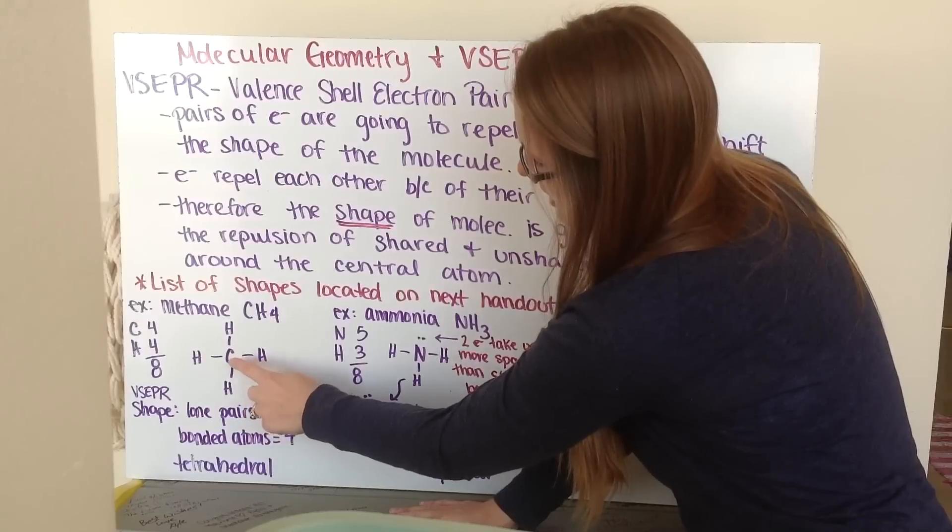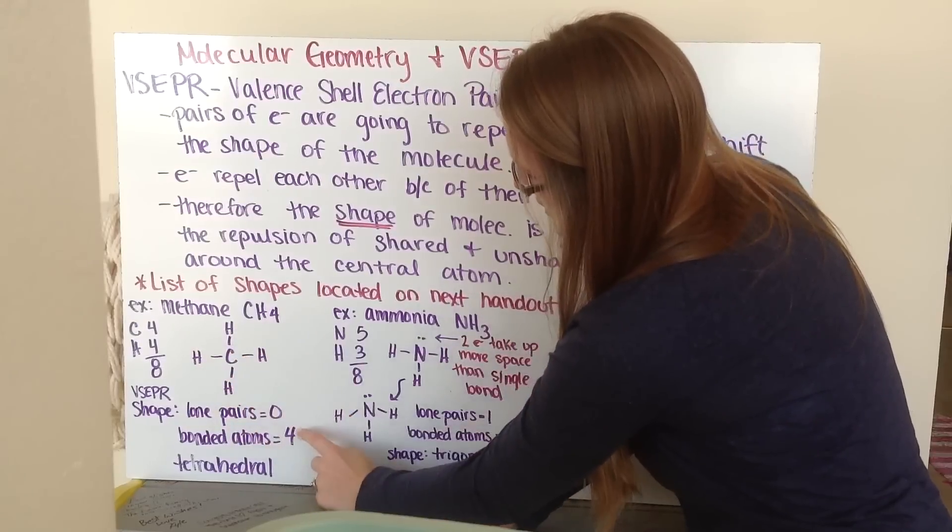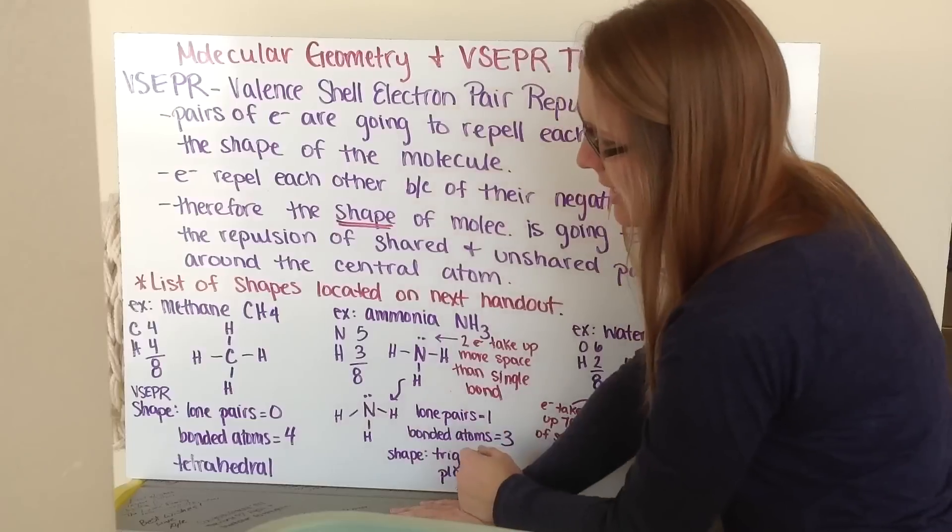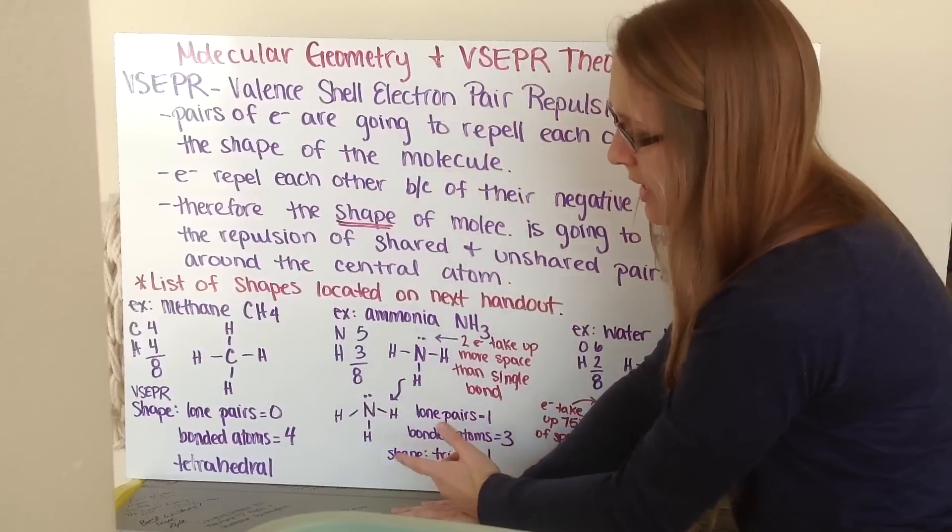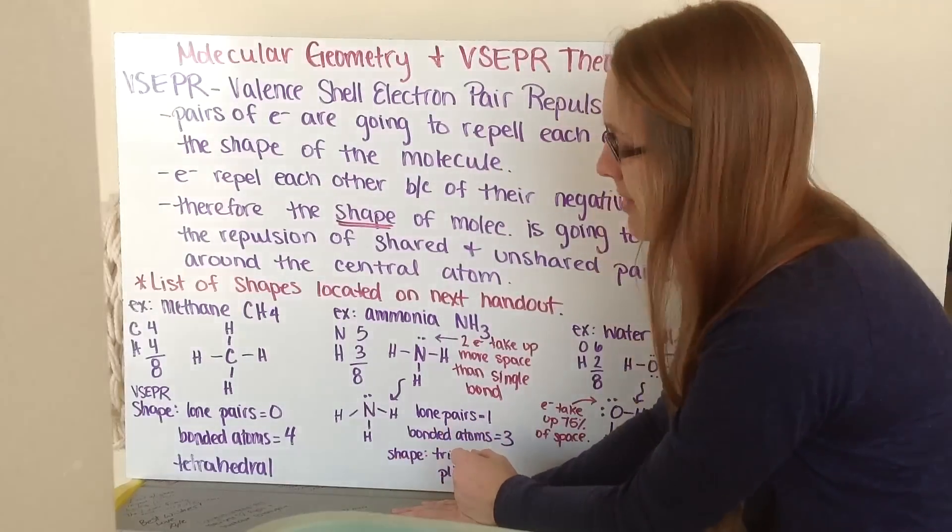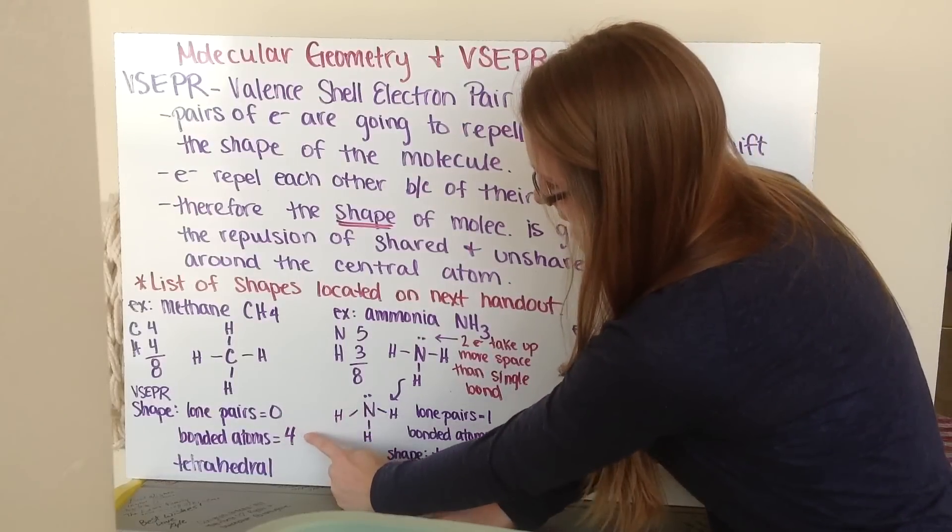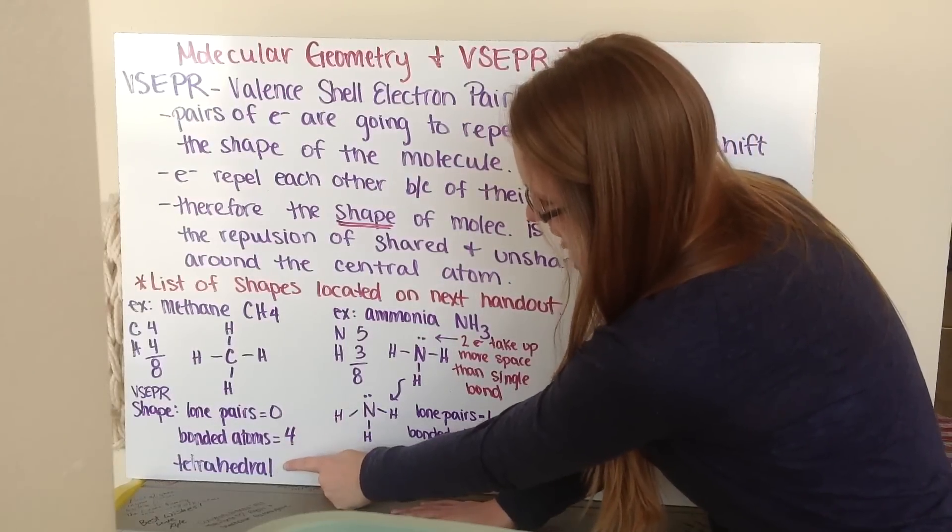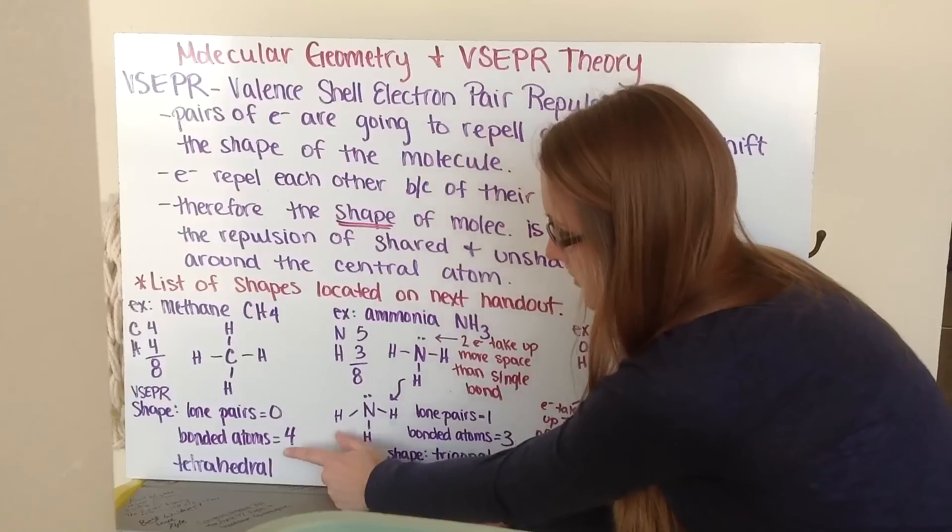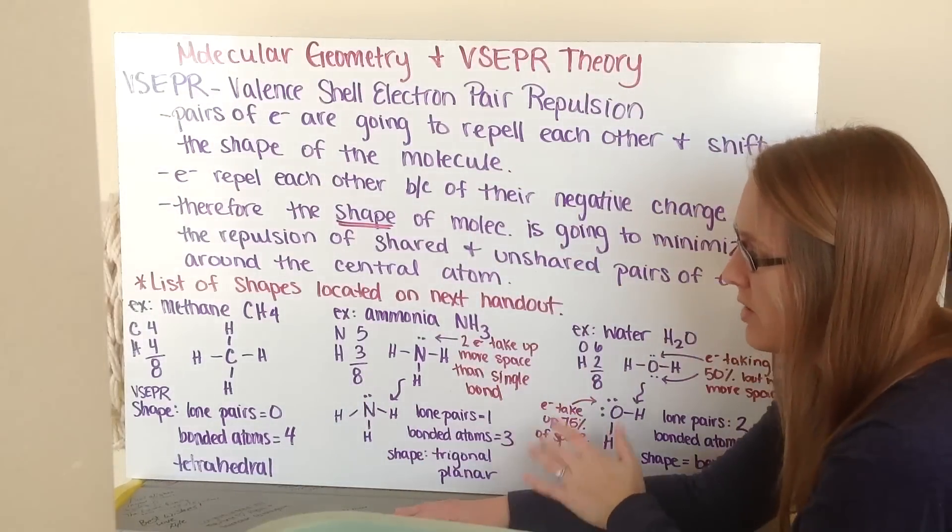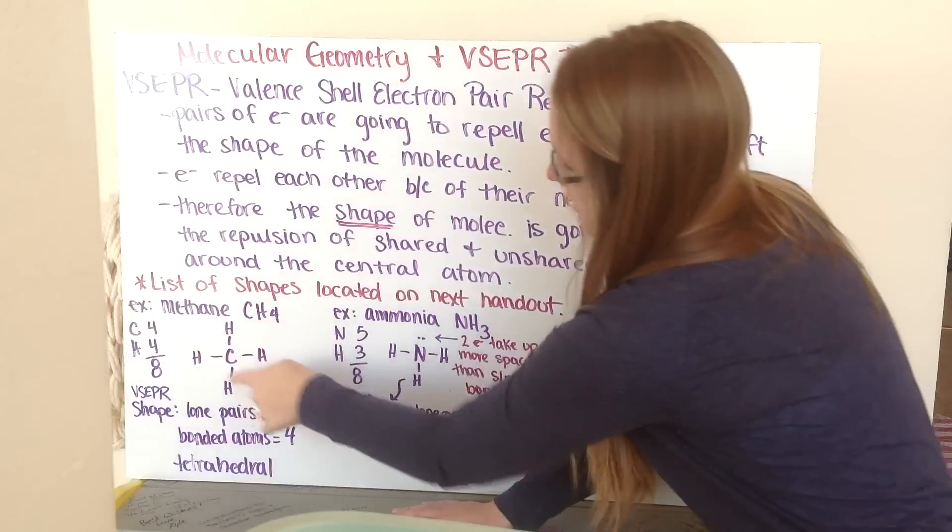I notice that I have just my carbon in the middle, four bonded atoms around it, no lone pairs of electrons. My VSEPR shape depends on my number of lone pairs and my number of bonded atoms. So I have zero lone pairs, four bonded atoms. I look on my sheet and it says this is a tetrahedral. Tetra means four. Hedral is part of our shape. So that makes sense—there's four things coming off of it.